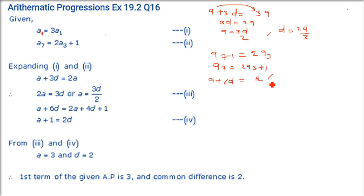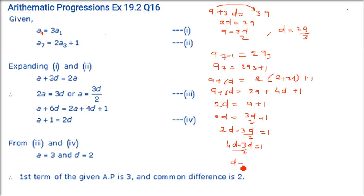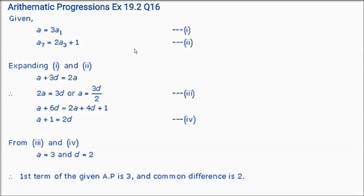A7 is a + 6d, and 2·a3 is 2(a + 2d) plus 1. So a + 6d equals 2a + 4d + 1. Taking a and d to opposite sides: 6d minus 4d equals 2a minus a plus 1, giving 2d equals a plus 1. Now put a as 3d/2: 2d equals 3d/2 plus 1. Multiply both sides by 2: 4d minus 3d equals 2, so d equals 2. Then a equals 3d/2 equals 3. So d equals 2 and a equals 3.